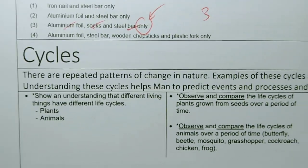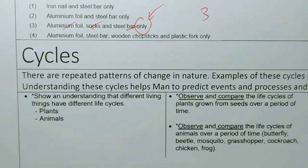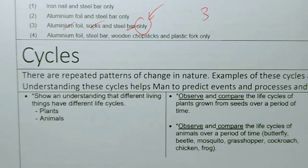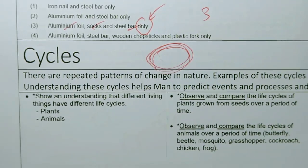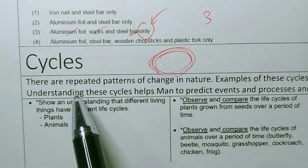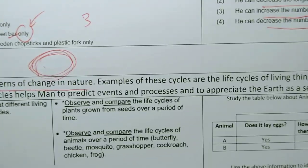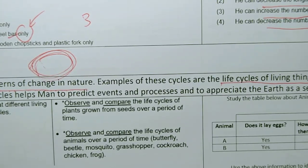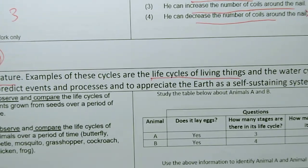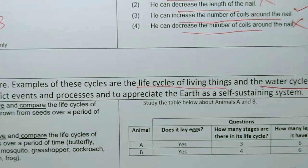Now in this revision video we're going to revise the theme of cycles. What does a cycle mean? Cycle means things are going round and round. But what can go round and round repeatedly? Well, humans notice that there are repeated patterns of change in nature. Examples of these cycles are life cycles of living things, and for non-living things we notice a water cycle.